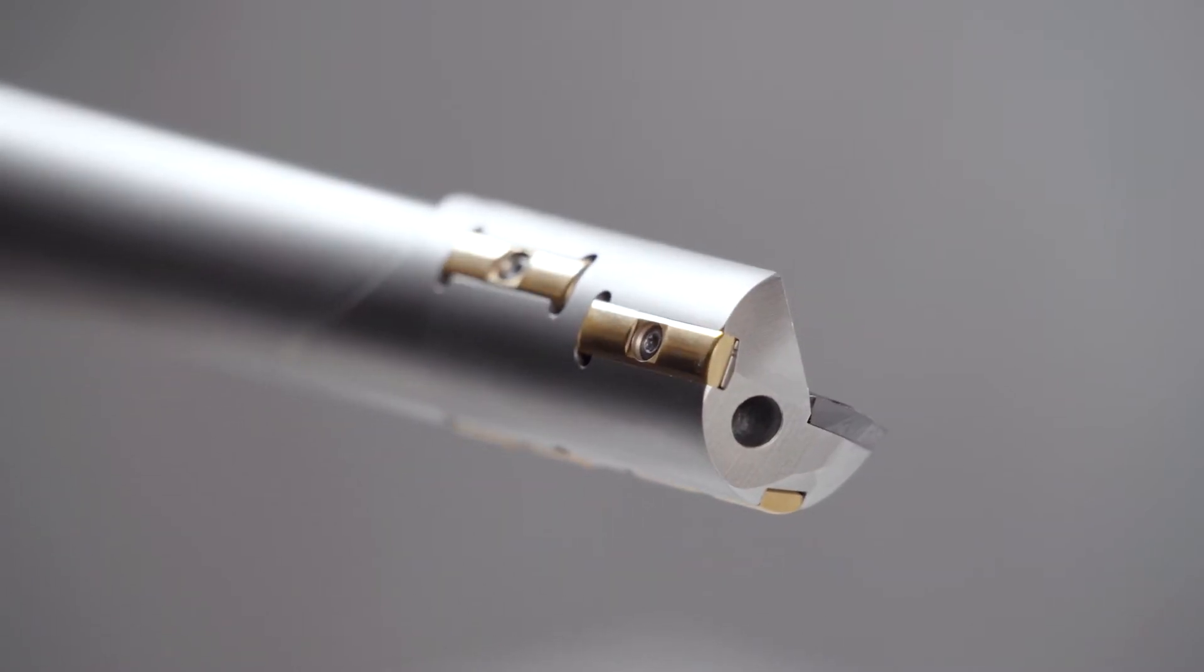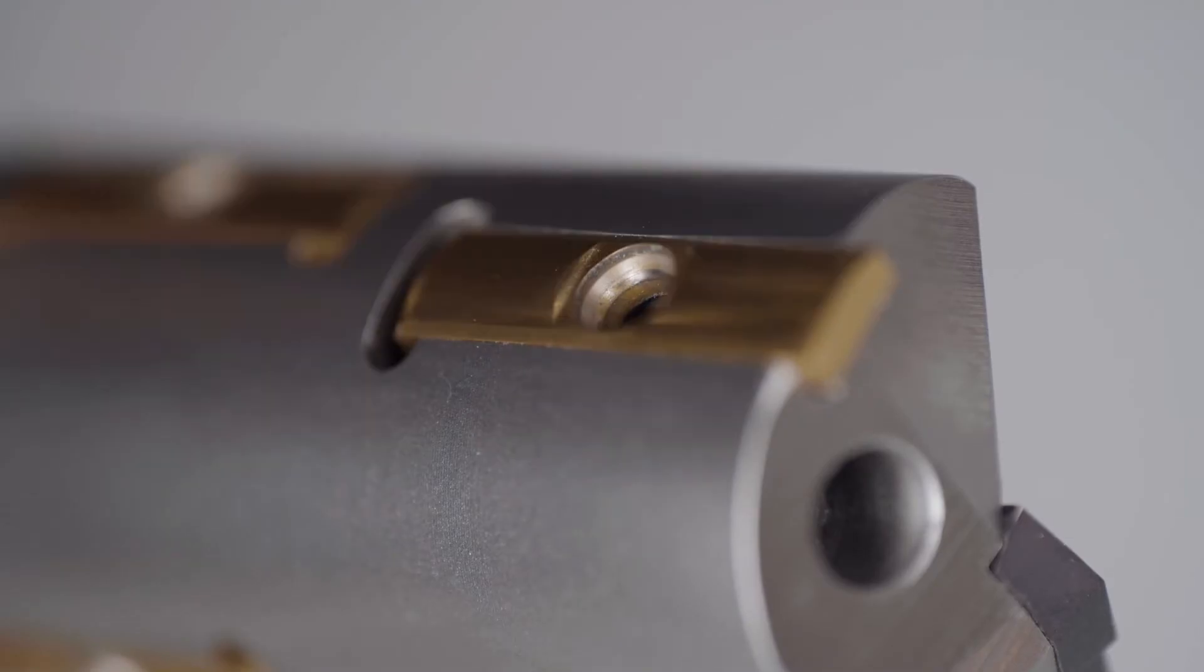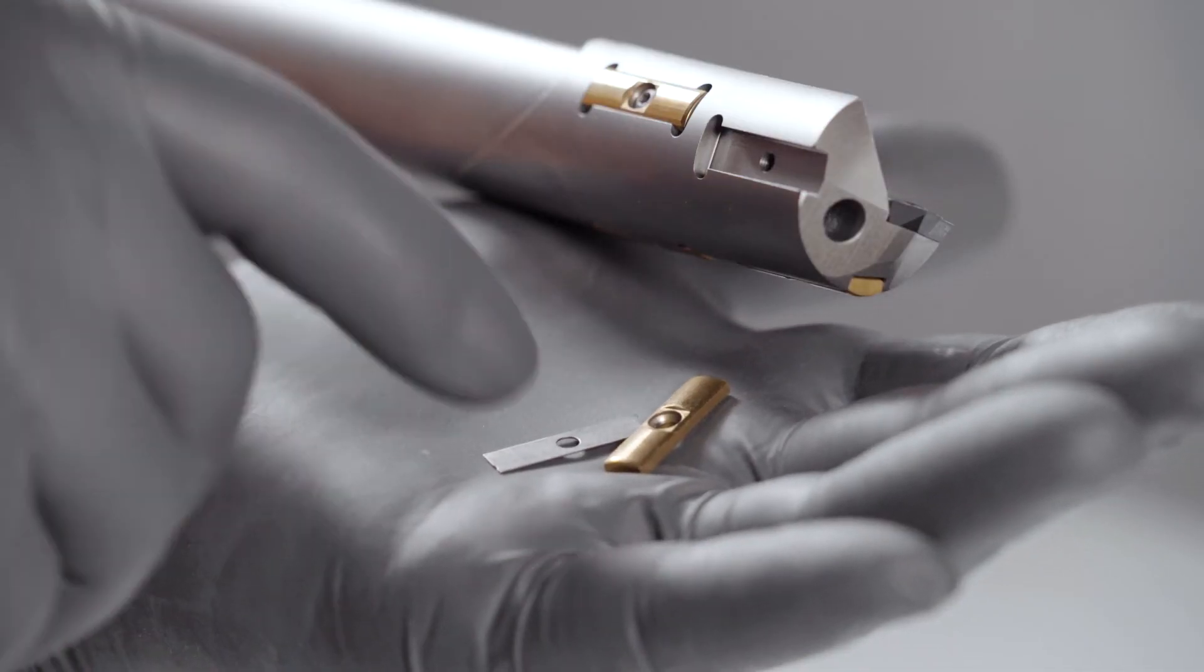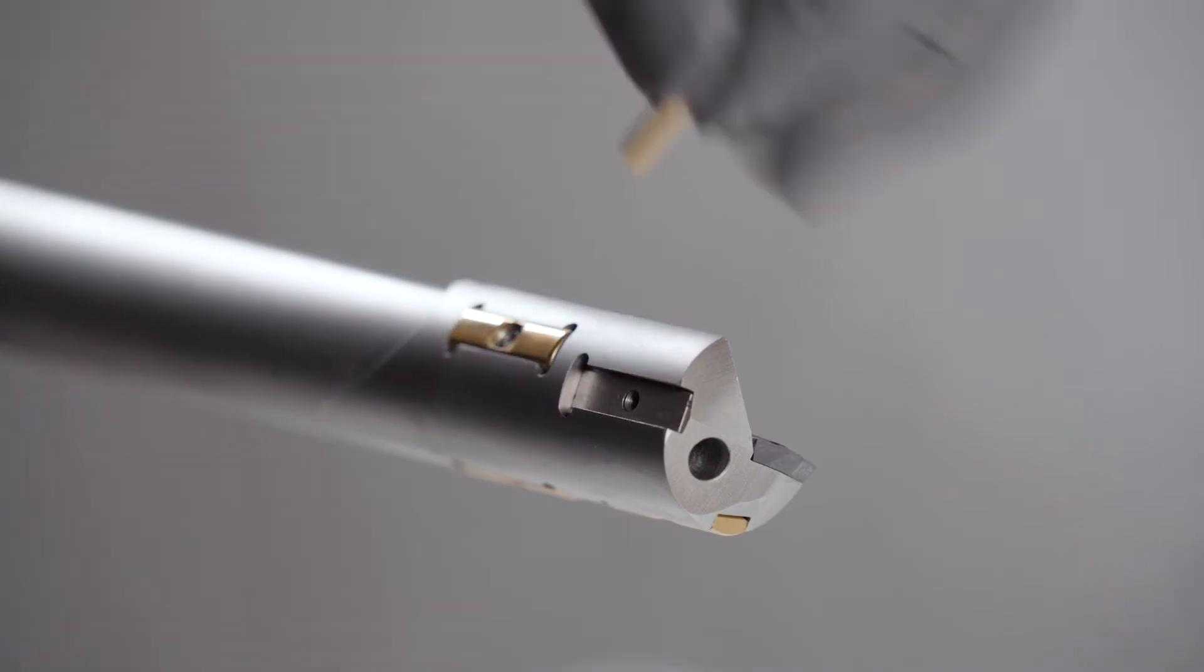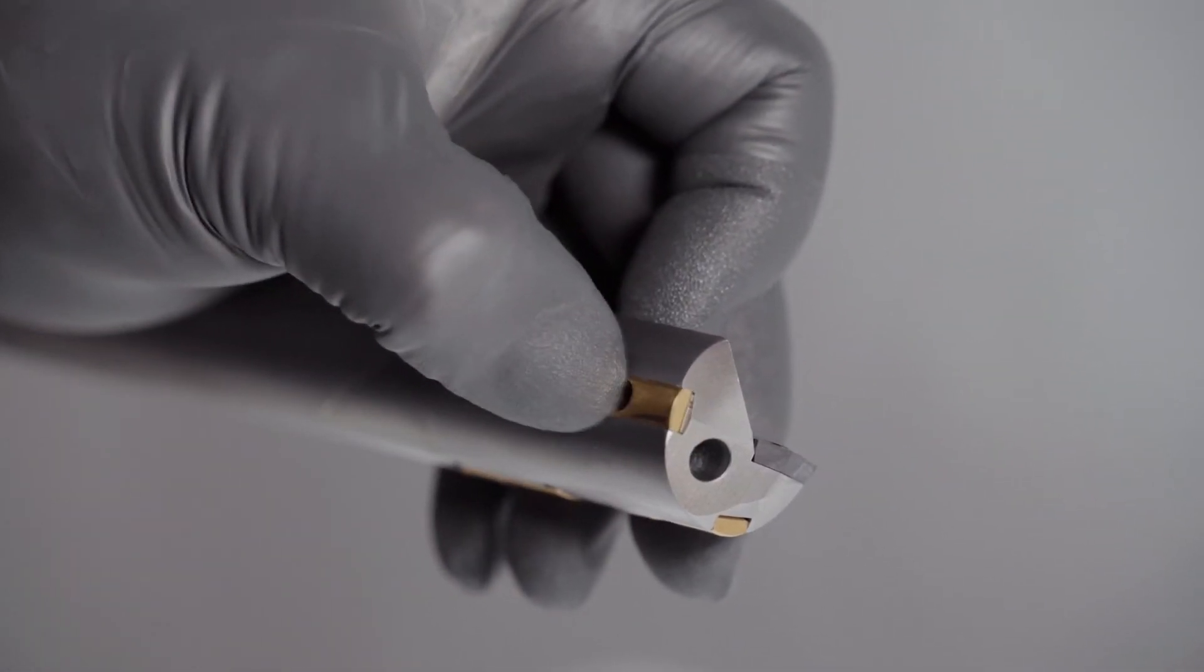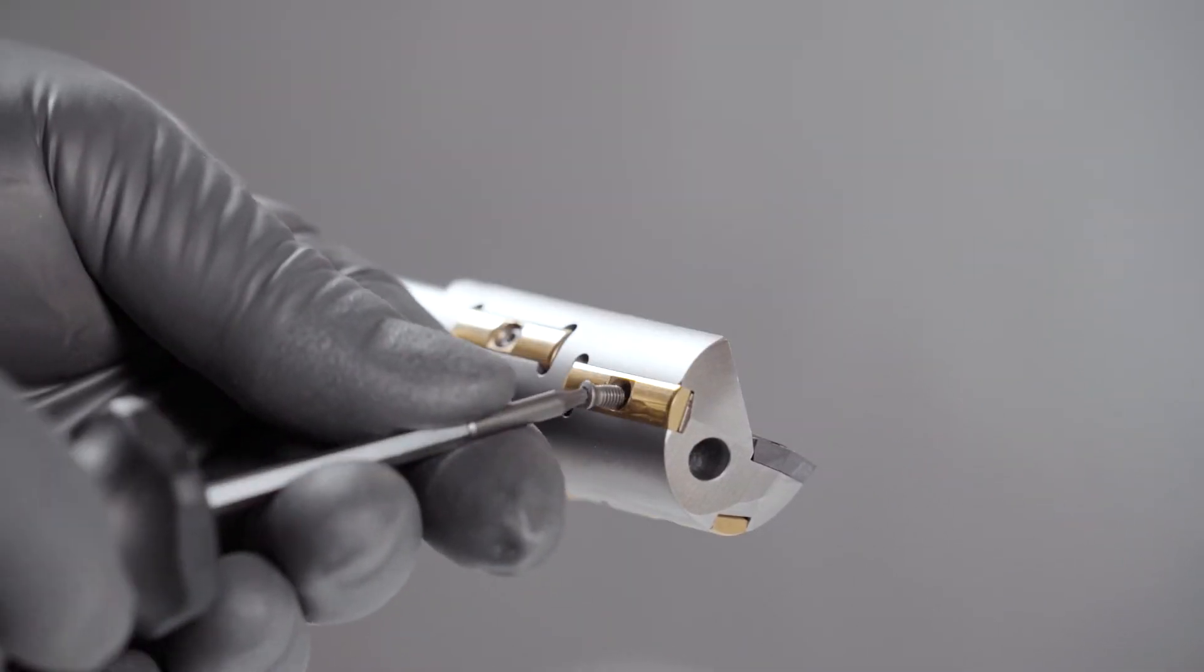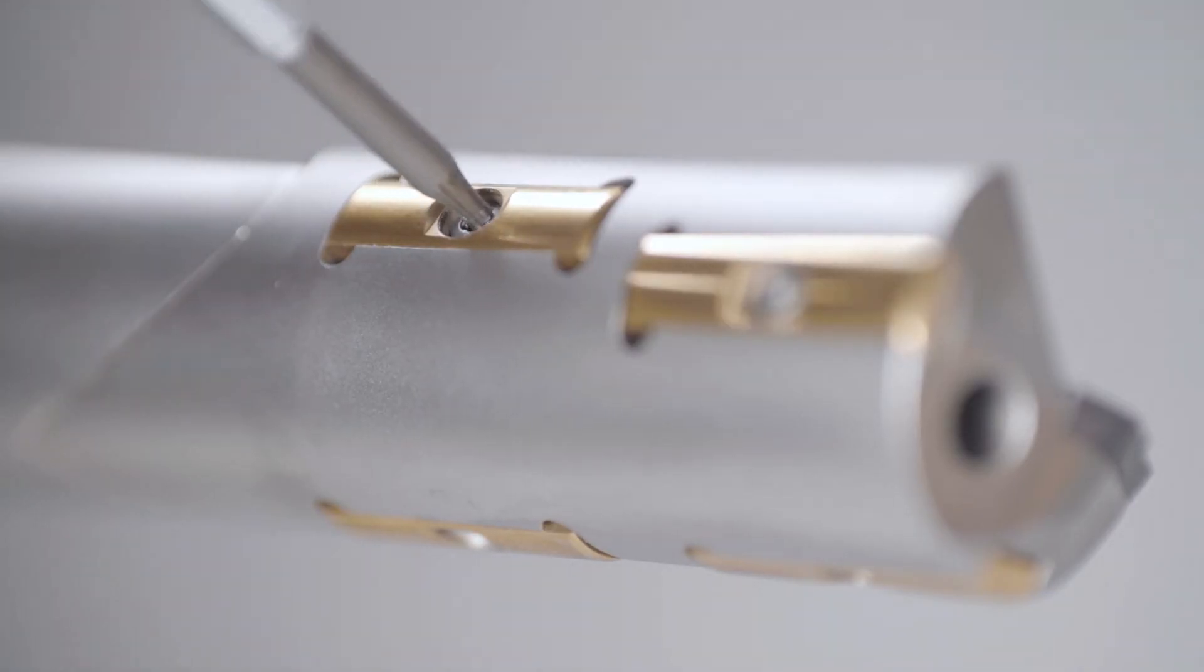The guide pad opposite the main cutting edge is relevant for the diameter of the drill hole. That's why it is adjusted to the right diameter using an adjusting plate. Make absolutely sure that the existing adjusting plates are always reassembled under the corresponding guide pads.